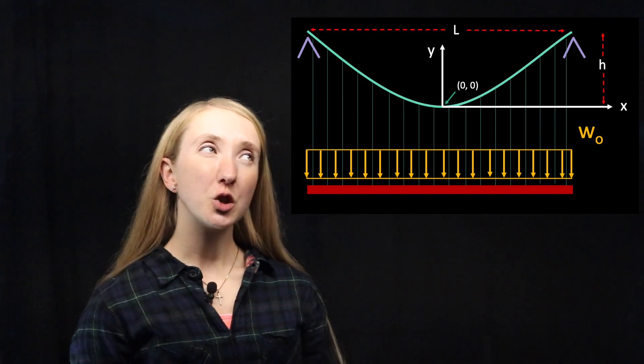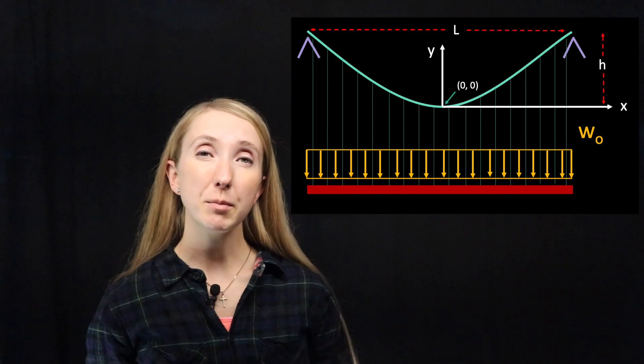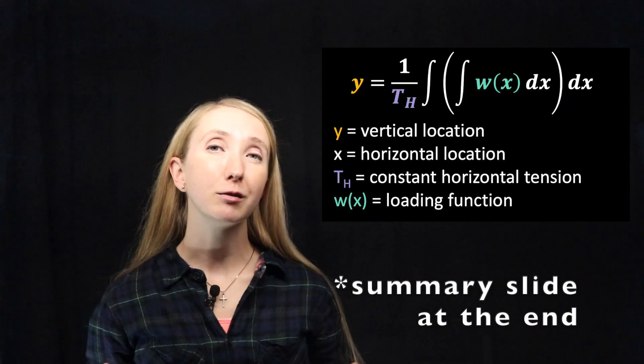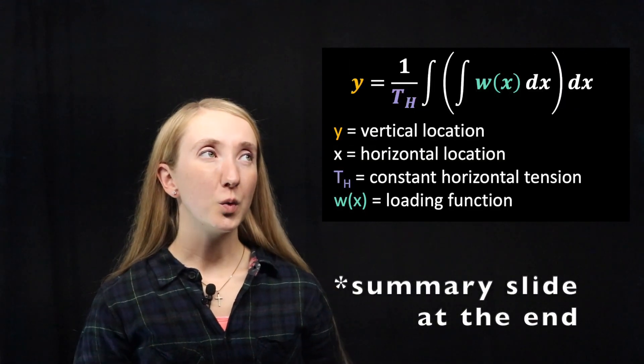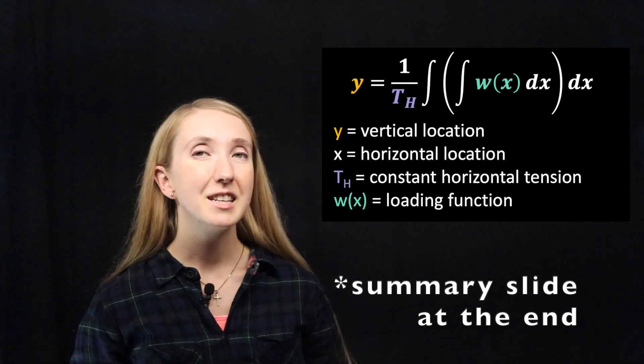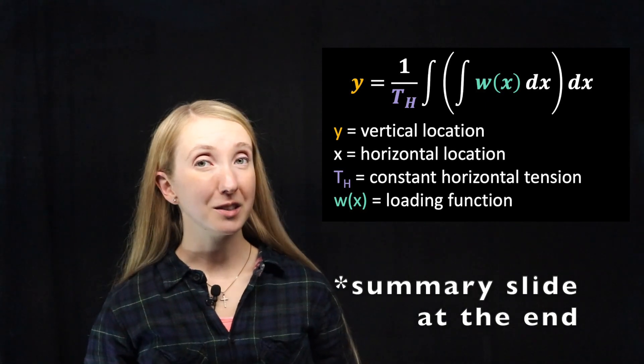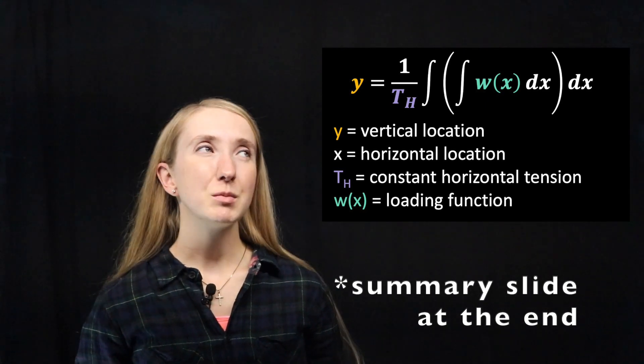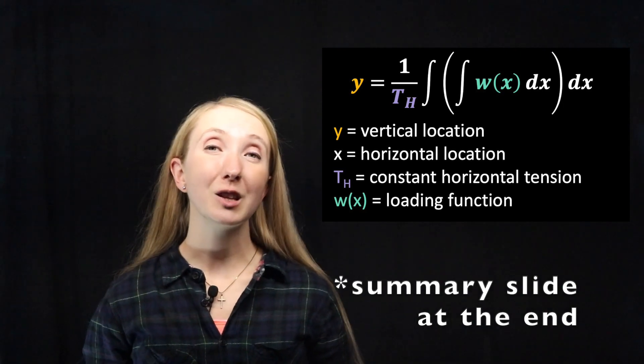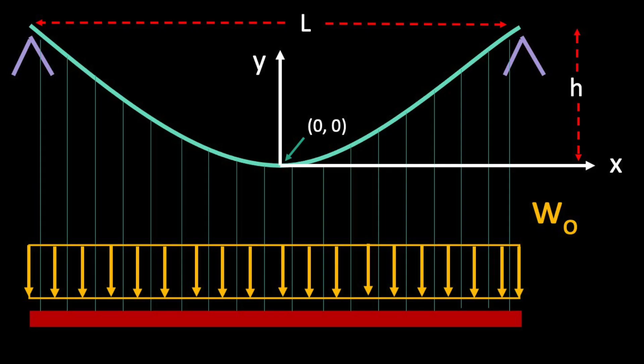Since this is distributed loading, we can use the shape equation for our cable that we found last time, where y is our vertical position, Th is our constant horizontal tension value, and w of x is our loading function which varies along the x-axis.